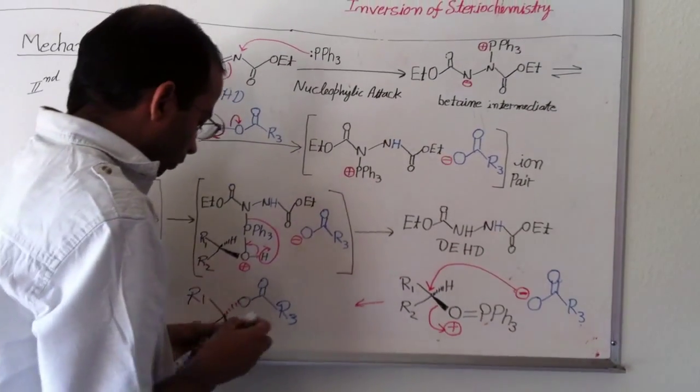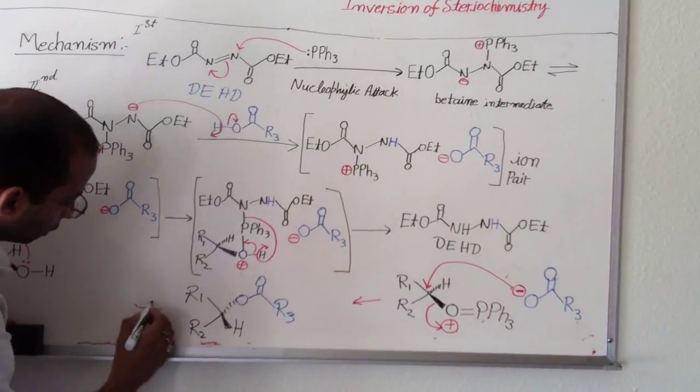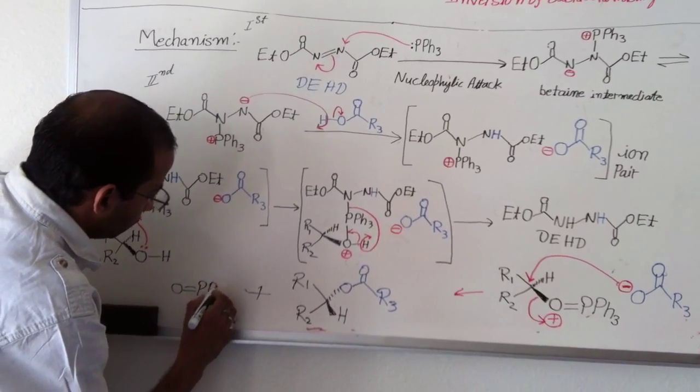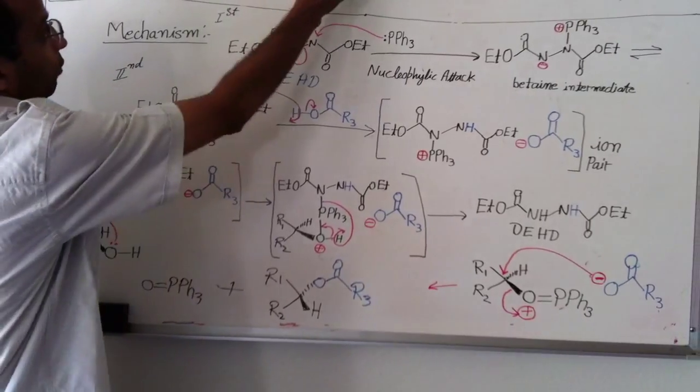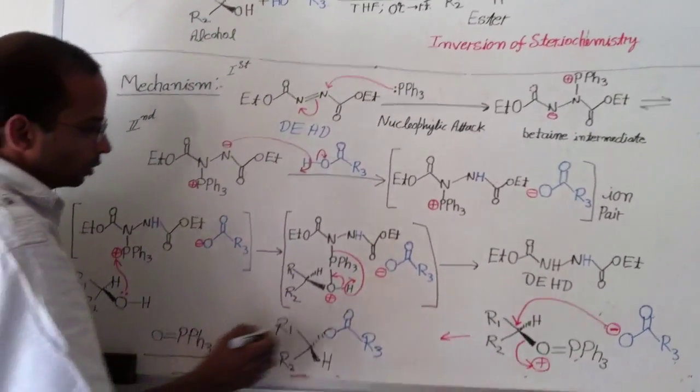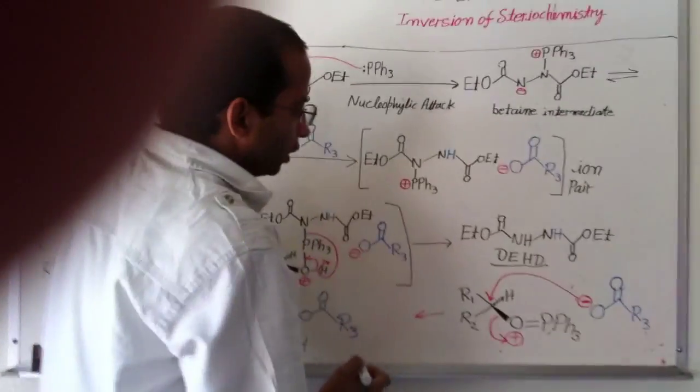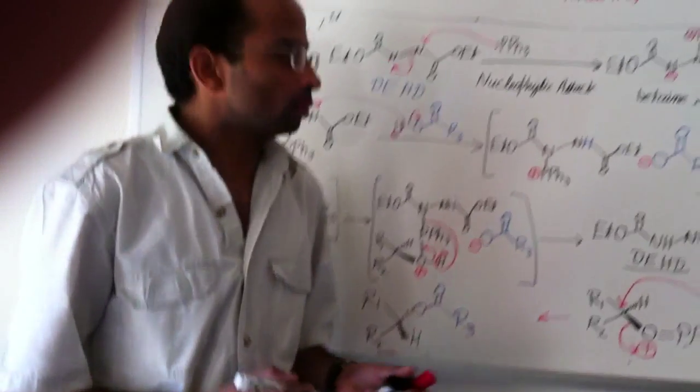And another byproduct forms in this reaction. I'm writing here. Oxygen equals triphenylphosphine. So, this is the main product. So, triphenylphosphine oxidizes into this one, and DEAD reduces to DEHD. And the ester forms. So, this is the main product.